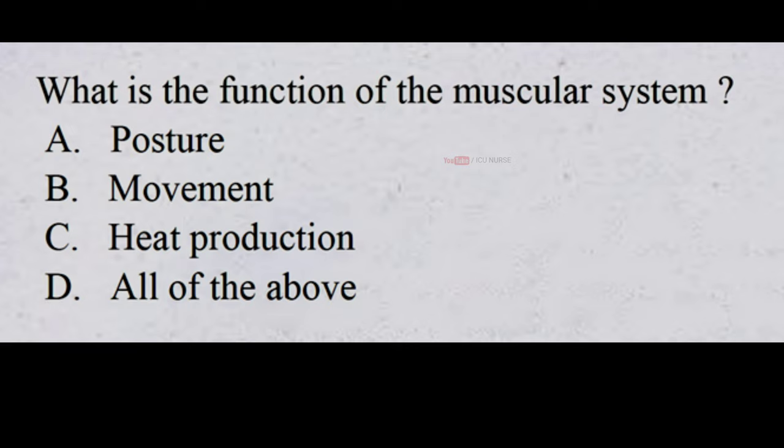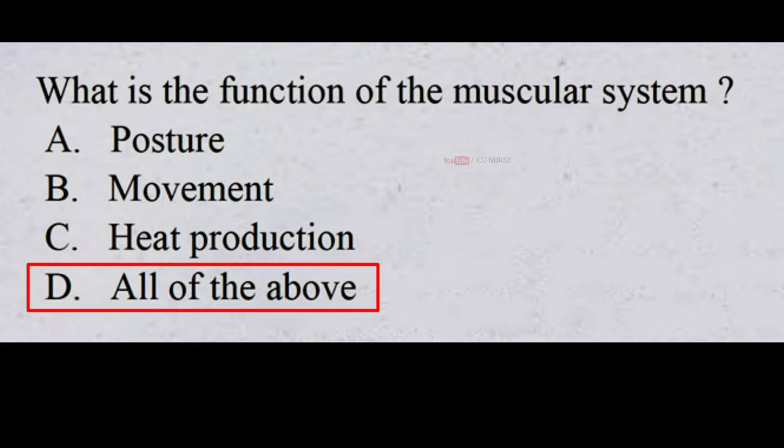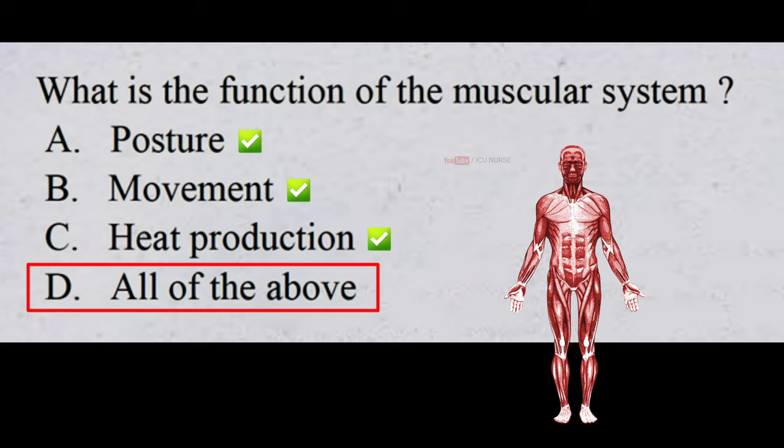What is the function of the muscular system? A. Posture. B. Movement. C. Heat production. D. All of the above. And the correct answer is D. All of the above. Posture, movement, and heat production are all functions of the muscular system.